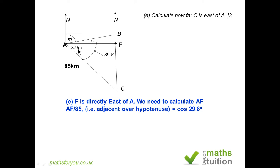Triangle AFC is a right-angle triangle. Therefore, to find AF, we do AF, which is adjacent to 29.8 degrees, divided by 85, which should give us the cosine of 29.8. Therefore, AF is now 85 times the cosine of 29.8 degrees, and we get 73.8 km to one decimal place.